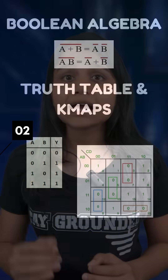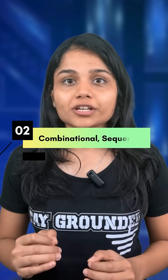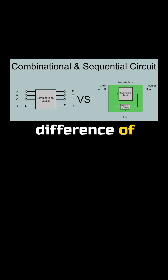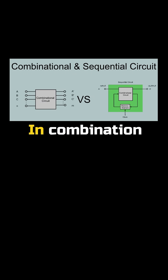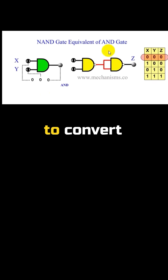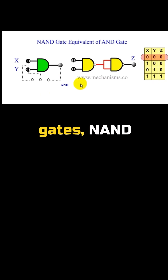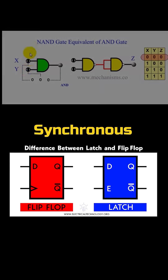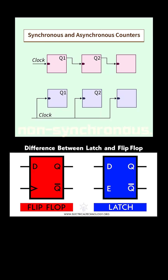Second, combinational and sequential logic. Start with the fundamental difference between combinational and sequential logic. In combinational circuits, be comfortable with all the gates and muxes. Know how to convert each of them using universal gates, NAND and NOR. You should also know latch versus flip-flop, and synchronous versus non-synchronous.